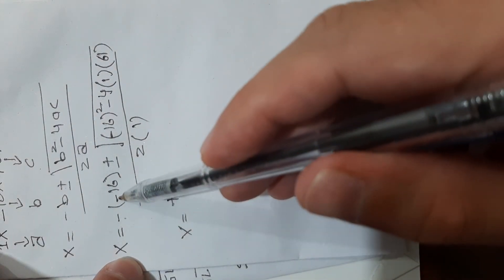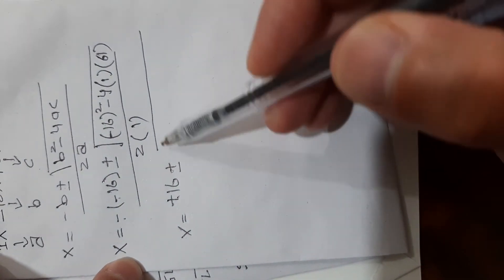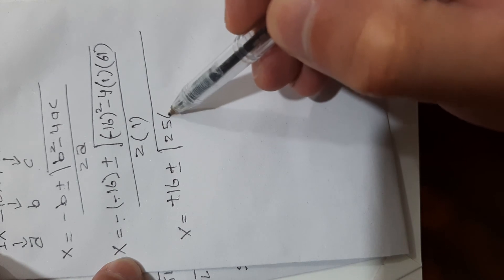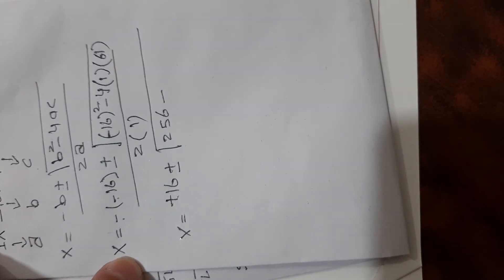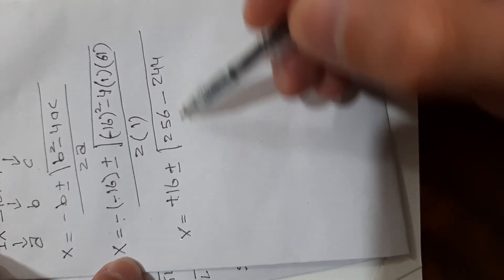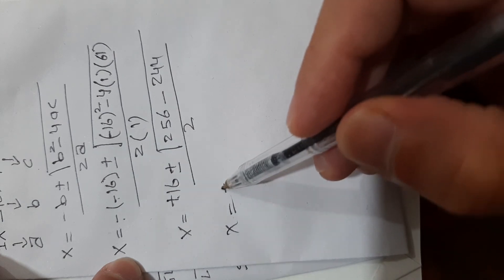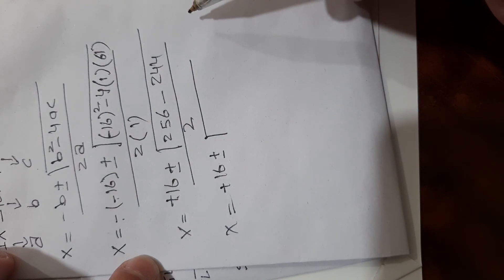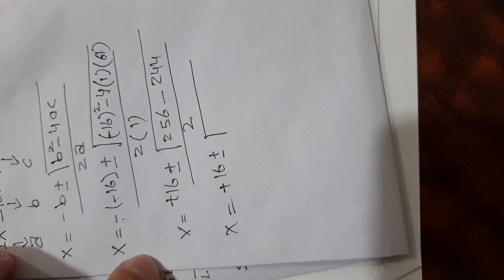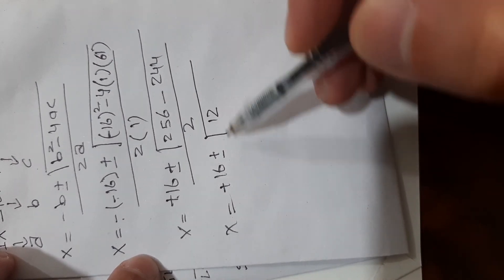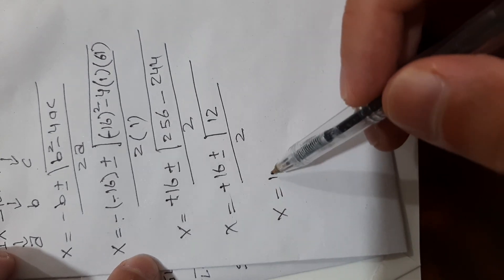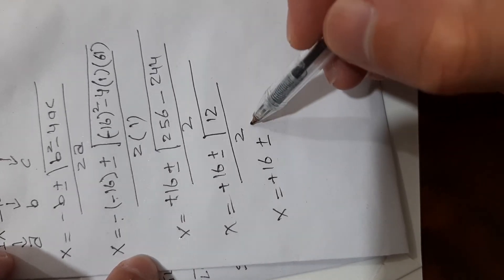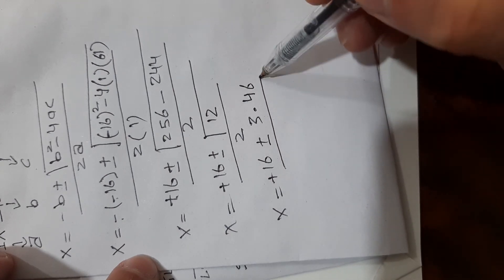Applying the quadratic formula with a equals 1, b equals minus 16, c equals 61: x equals minus of minus 16, plus or minus the square root of minus 16 squared minus 4 times 1 times 61, divided by 2 times 1. This gives plus 16, plus or minus the square root of 256 minus 244, divided by 2. That is the square root of 12, divided by 2.